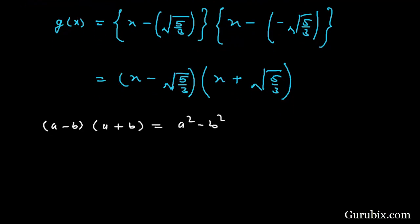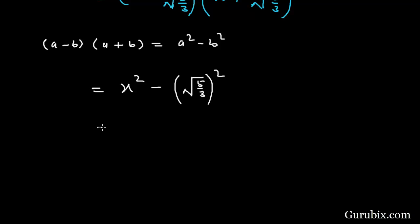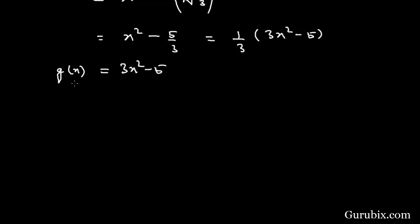We apply the identity (a - b)(a + b) = a² - b², giving us x² - (√(5/3))² = x² - 5/3, which equals (1/3)(3x² - 5). Therefore G(x) = 3x² - 5. Since G(x) is formed from the known zeros of P(x), G(x) is a factor of P(x).